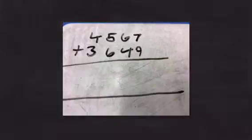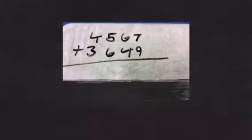Today we're going to show you how to add four digits in the column method. 4,567 add 3,649.